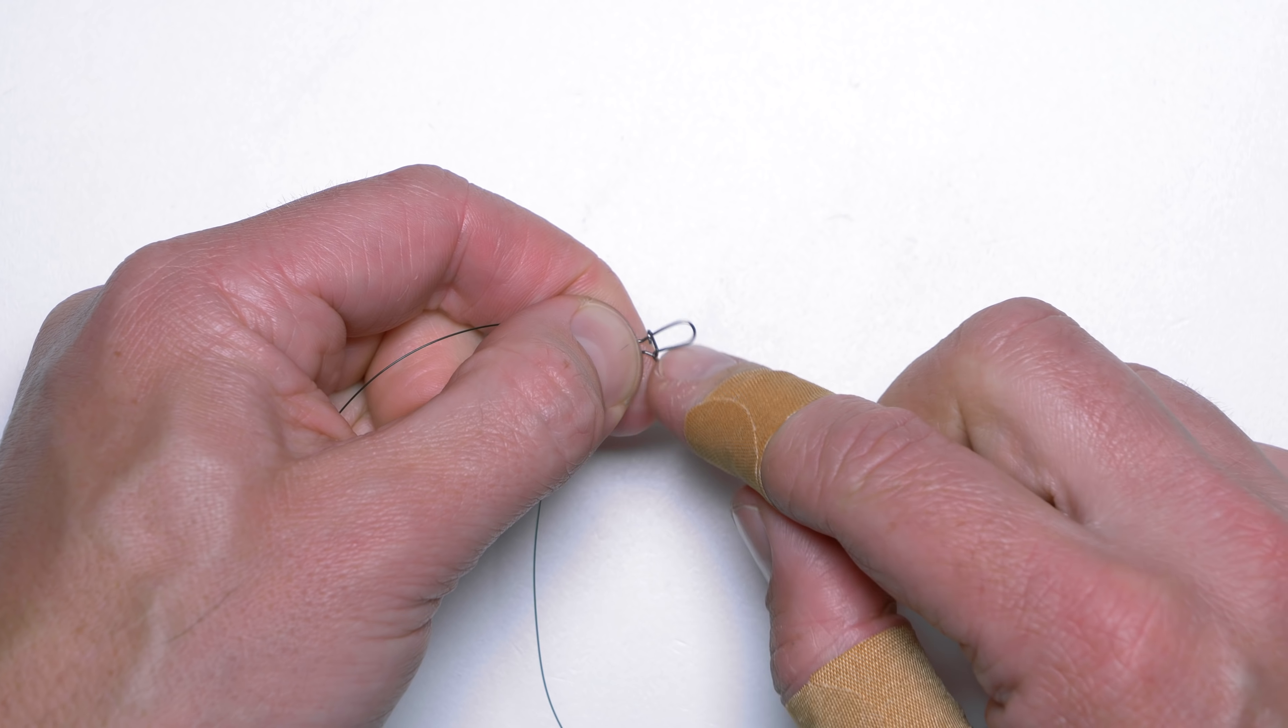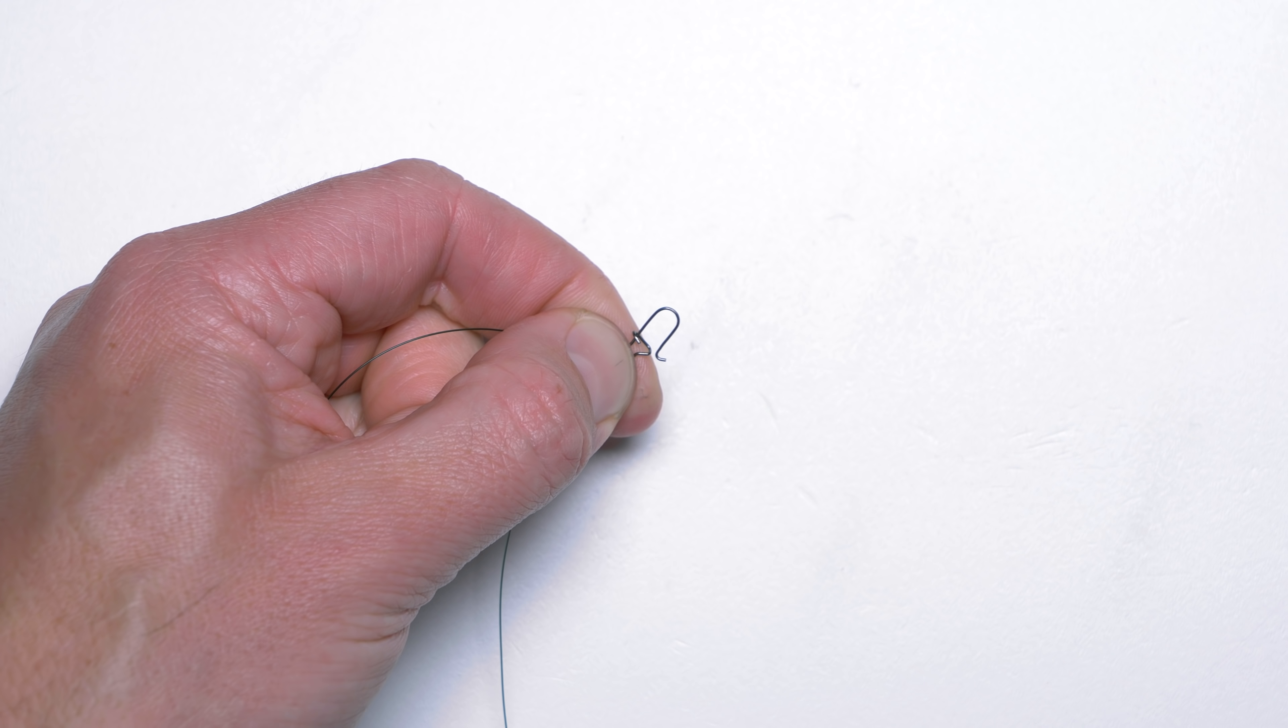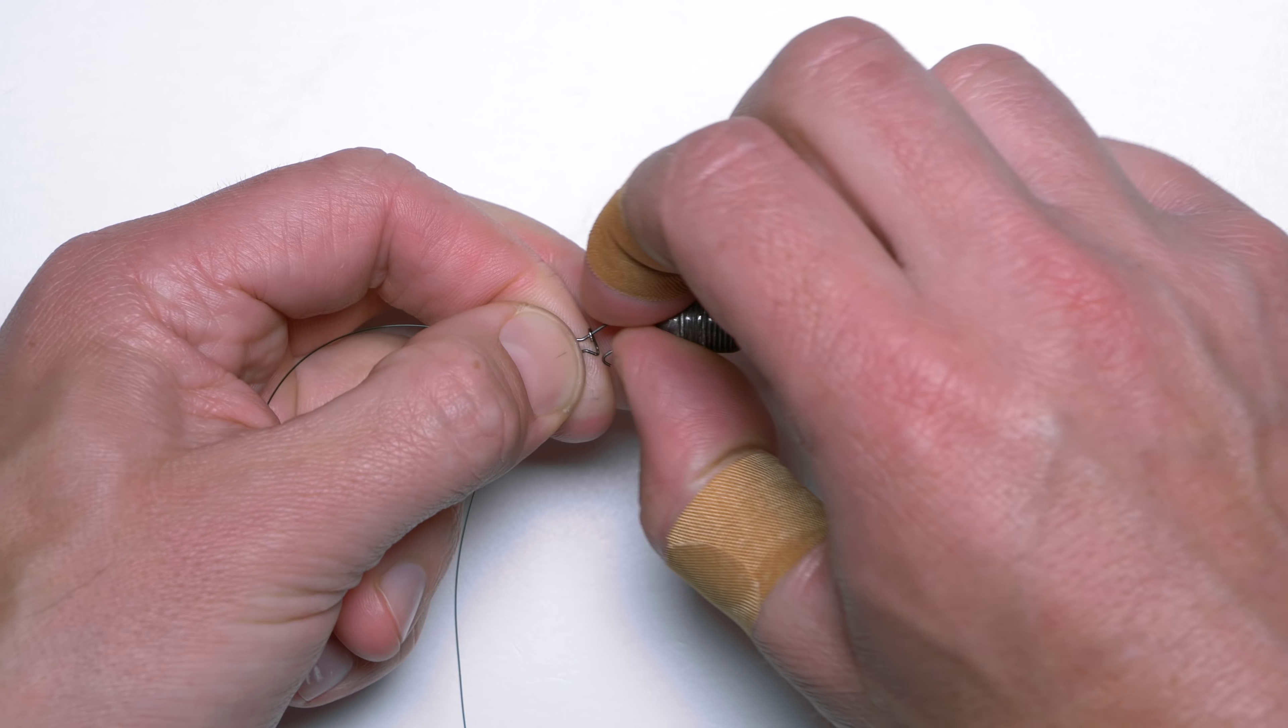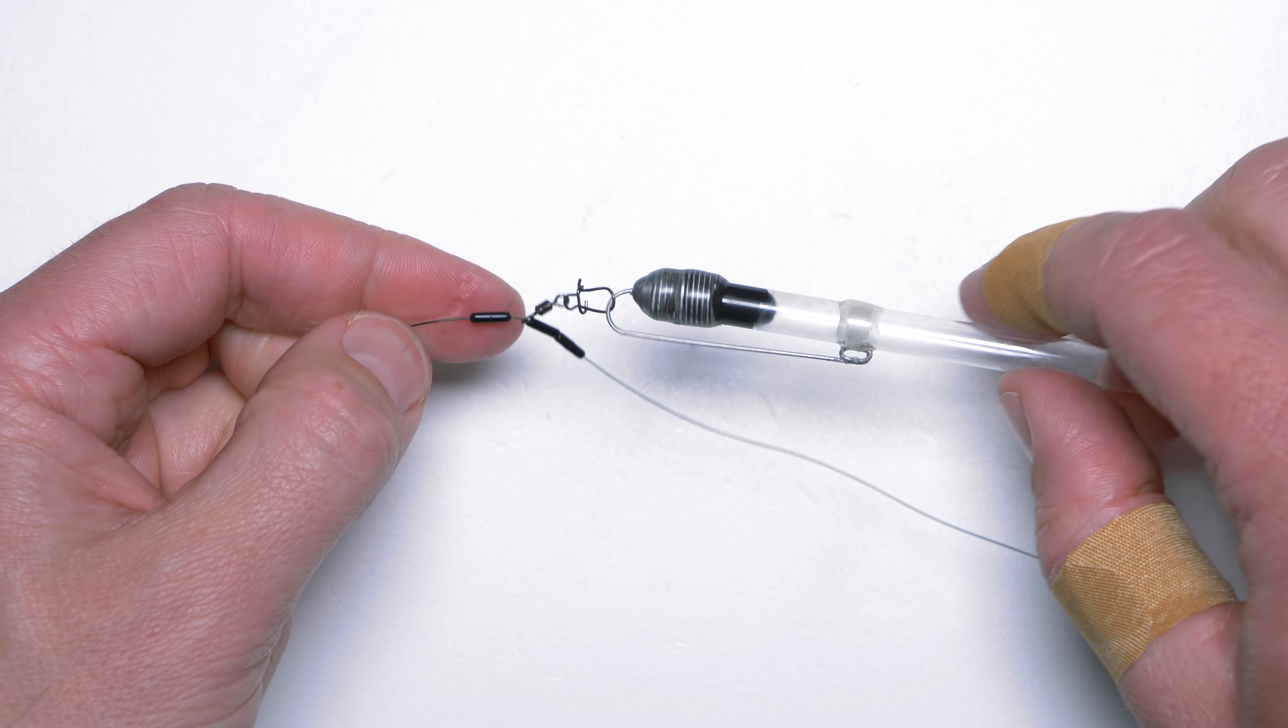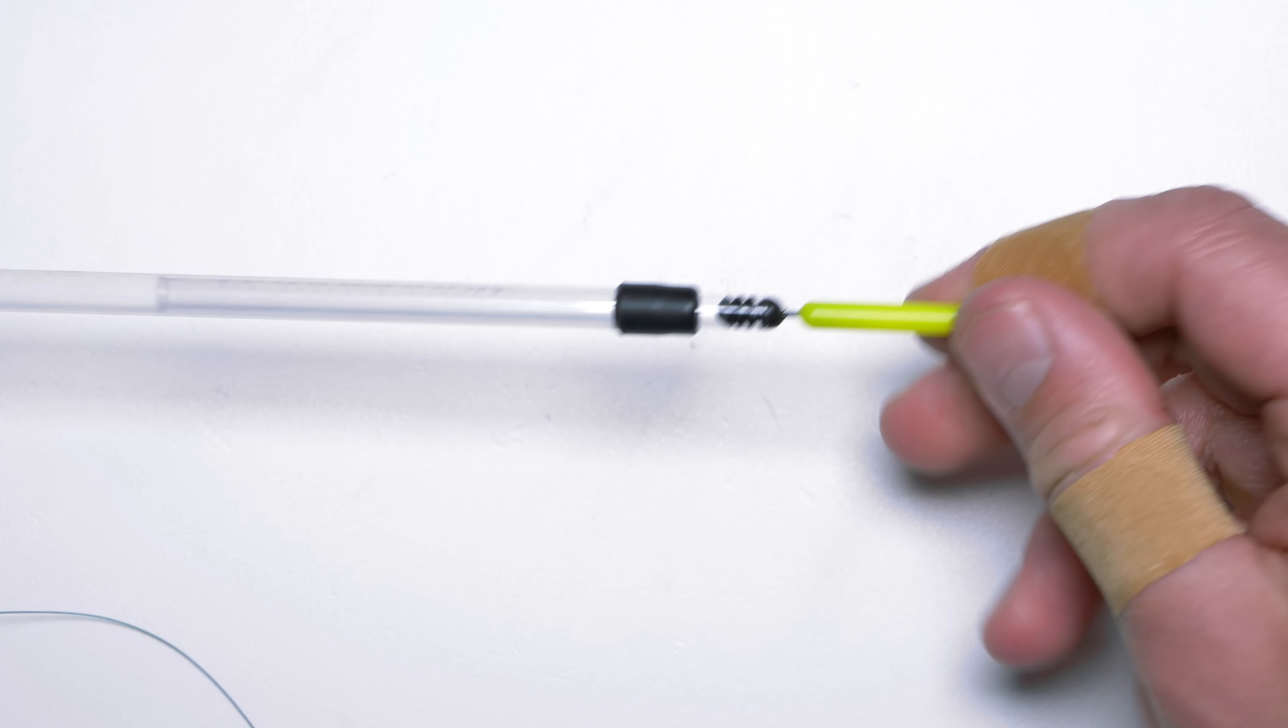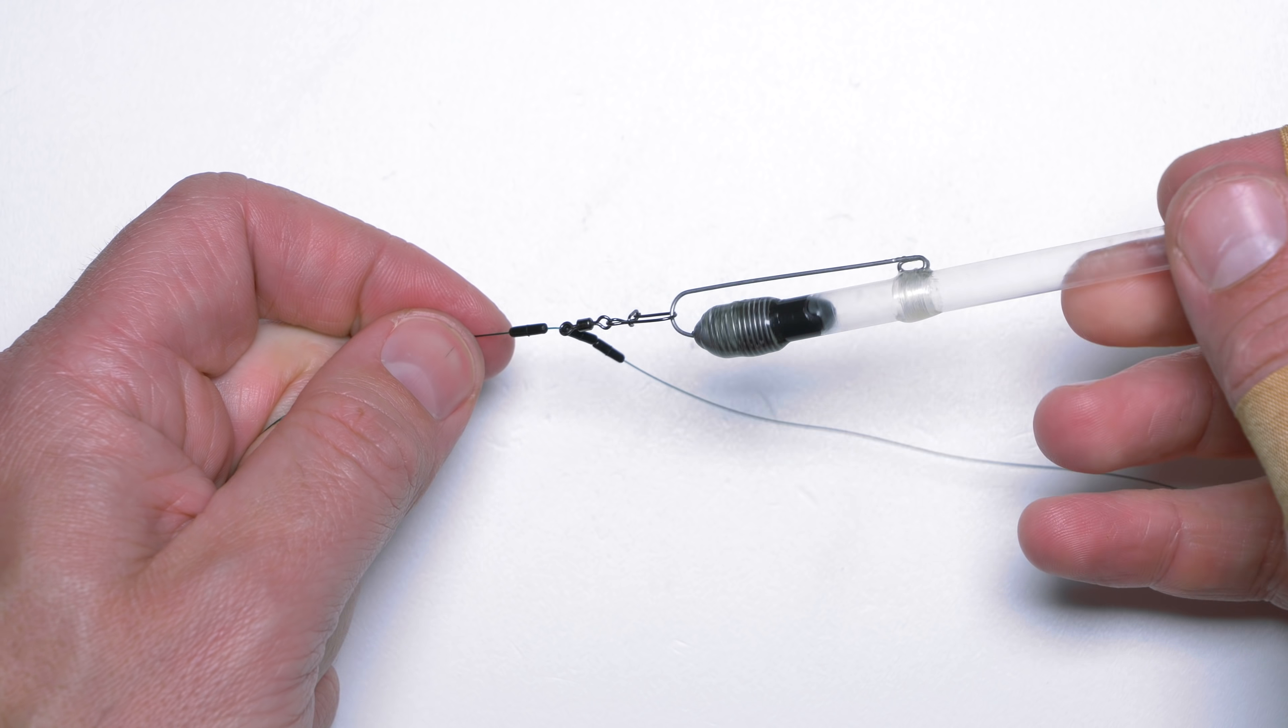Then I will attach a float onto the clip. In this case I am using Kraluzo Rocket Light Wagler in 4 grams but it can be any float of your choice of course.